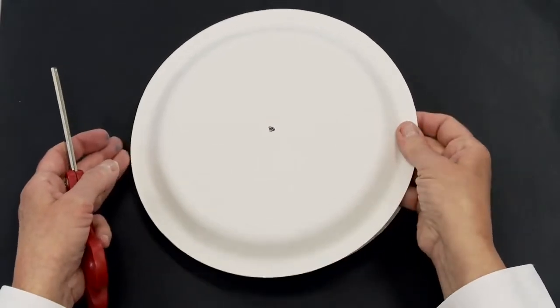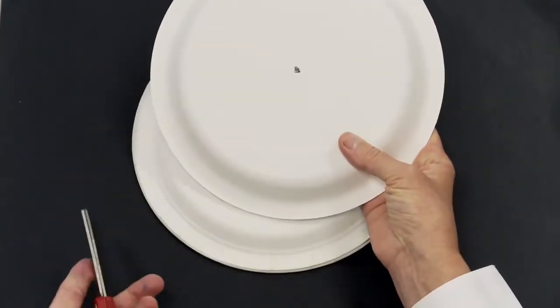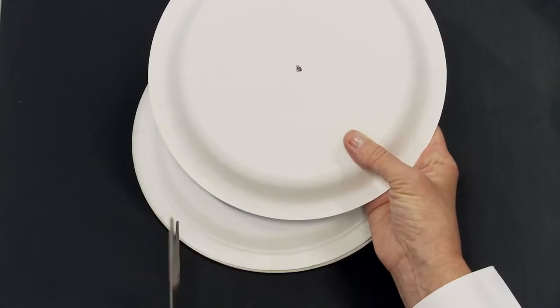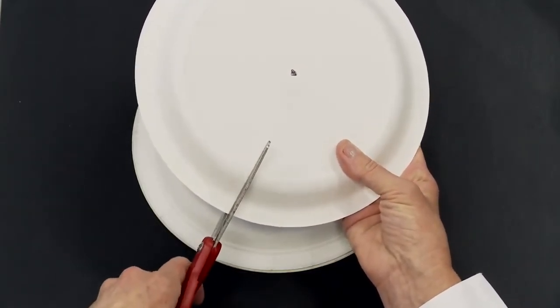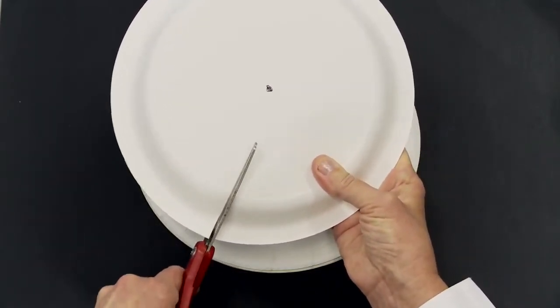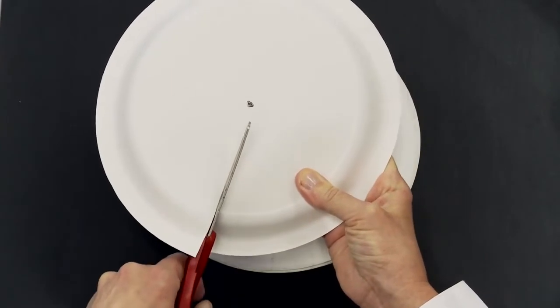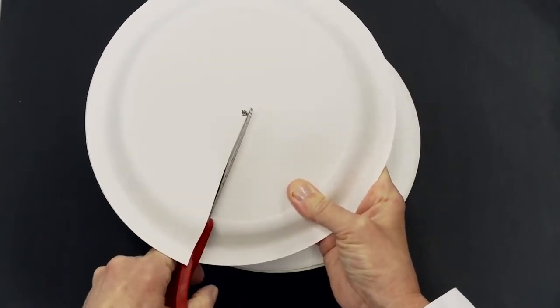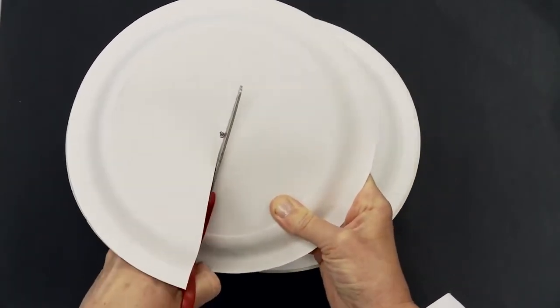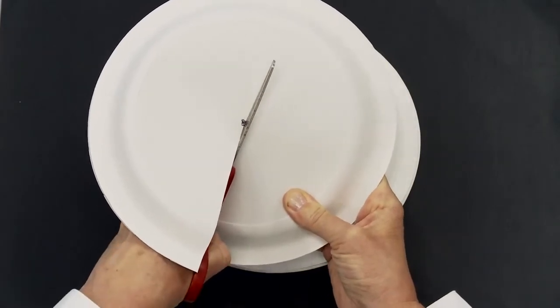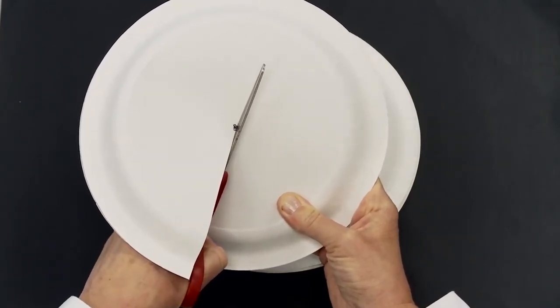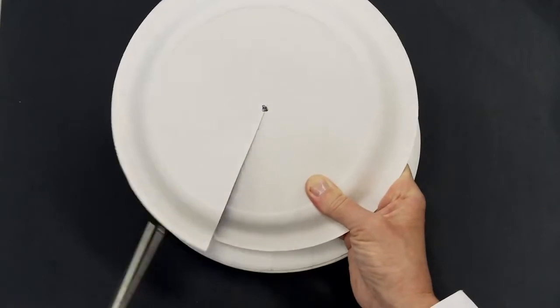Then I have them take two plates at a time, and from any point on the circumference of the circle, they're going to cut from the circumference along a radius to the center point. And then I have them just cut probably about a sixteenth of an inch past that center point.